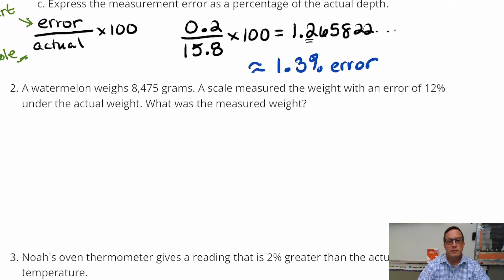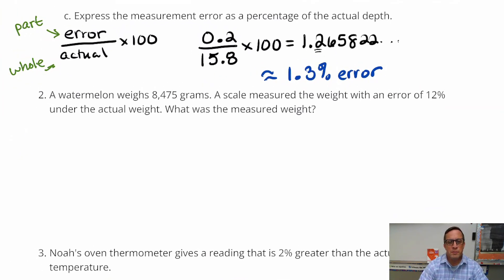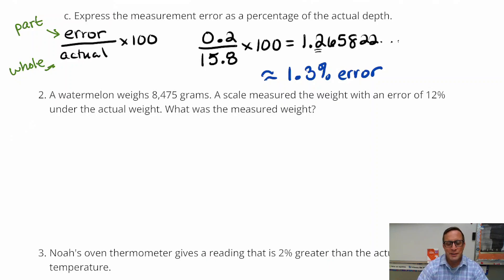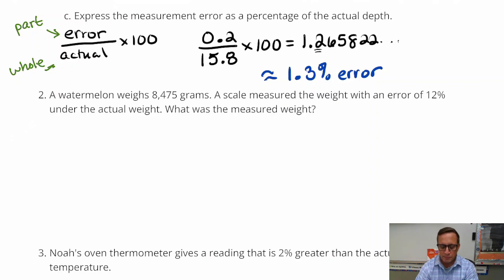Number two: a watermelon weighs 8,475 grams. A scale measured the weight with an error of 12% under the actual weight. What was the measured weight?